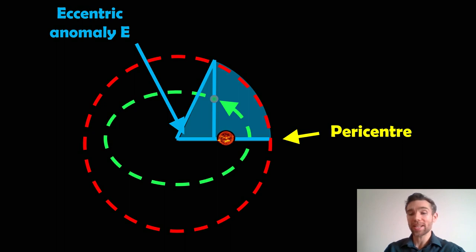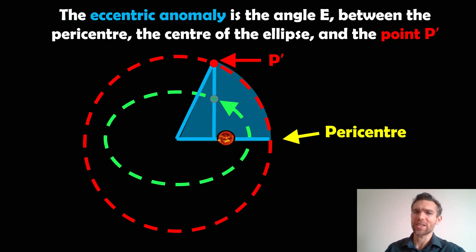And then the angle from where it intersects the circle to the centre of the ellipse of the elliptical orbit, that angle there is then your eccentric anomaly E. So the definition is the eccentric anomaly is the angle E between the pericentre and the centre of the ellipse and this point we've got on the actual circle, the circular orbit there.